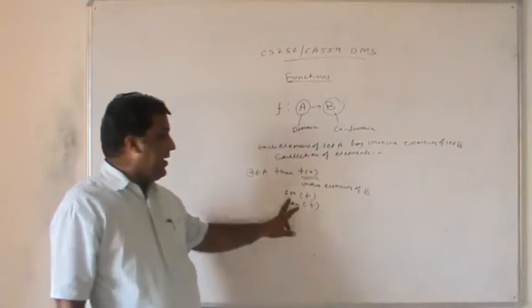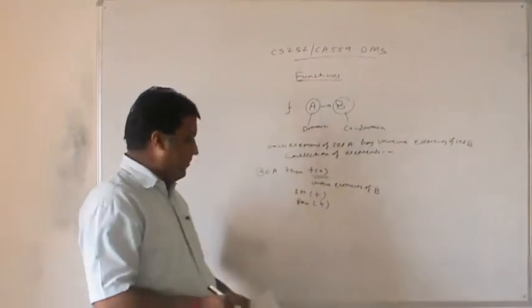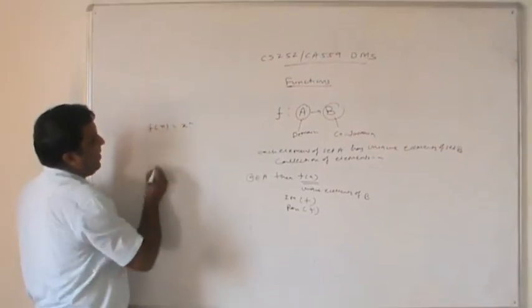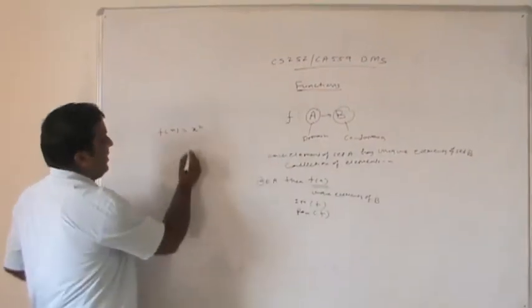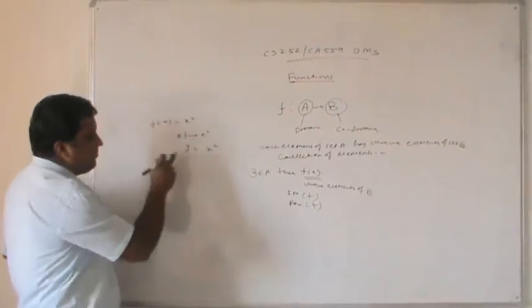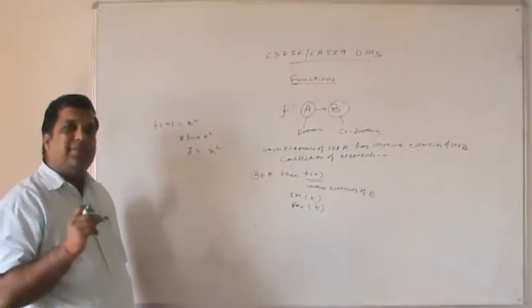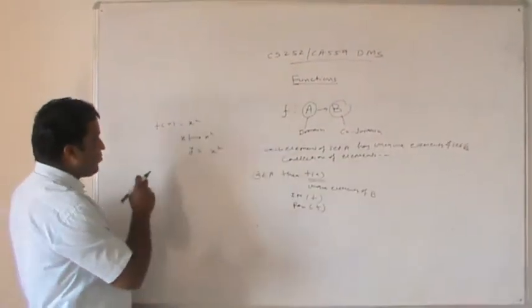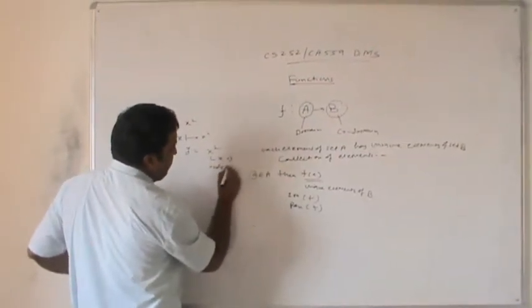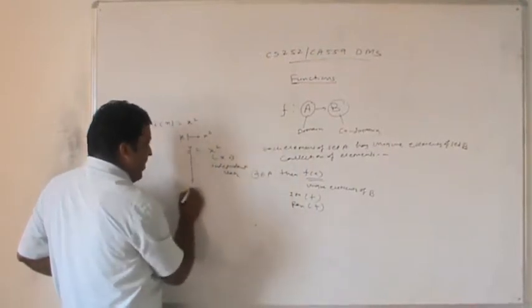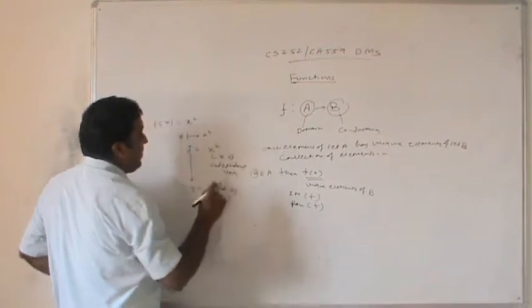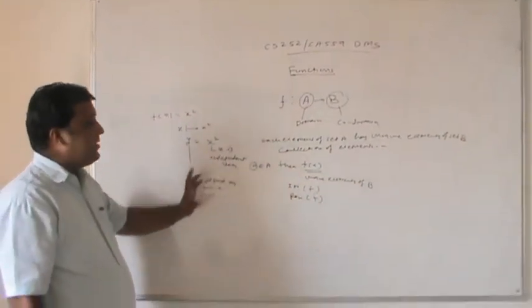The image of a function can be represented as im(f) or range(f). We can take the function f(x) = x², which can also be represented as x → x² or y = x². In y = x², x is the independent variable and y is the dependent variable, because y depends on the value of x.